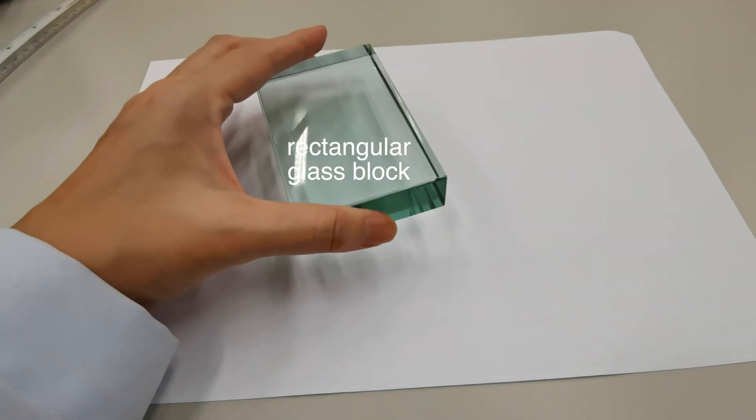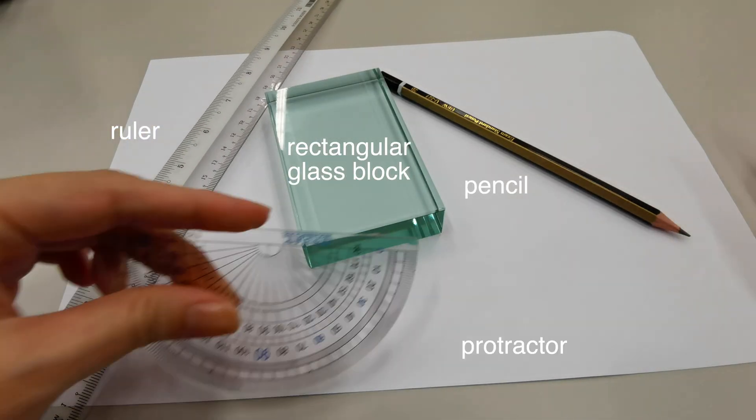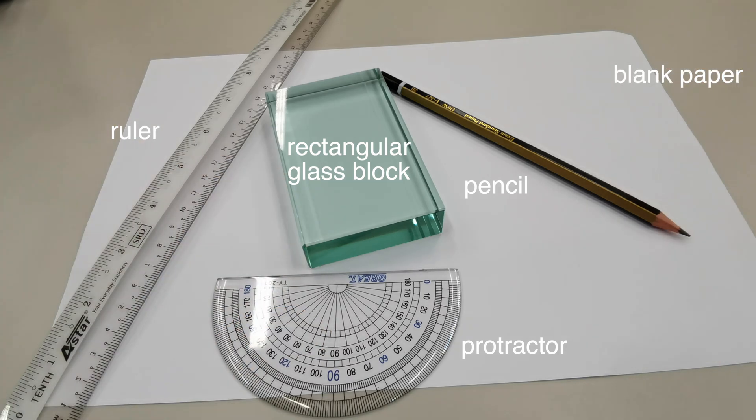For the reflection experiment, in addition to the ray box, you're going to need a glass block, pencil, a long ruler, a protractor, and of course, a blank piece of paper.